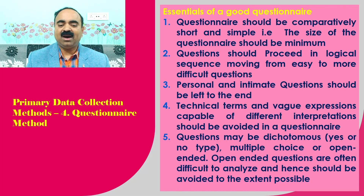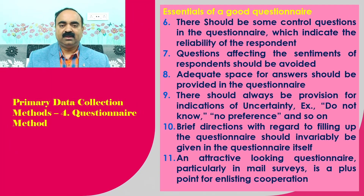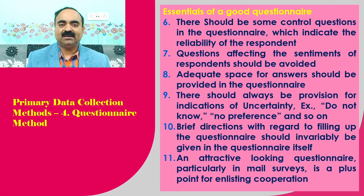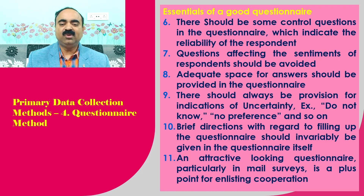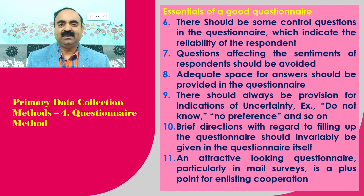Open-ended questions are often difficult to analyze and hence should be avoided to the extent possible. Six, there should be some control questions in the questionnaire which indicate the reliability of the respondent. Seven, questions affecting the sentiments of respondents should be avoided. Eight, adequate space for answers should be provided in the questionnaire. Nine, there should always be provision for indications of uncertainty, for example, do not know, no preference, and so on.